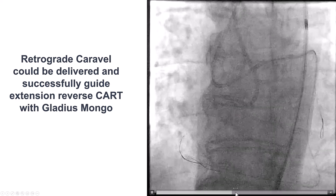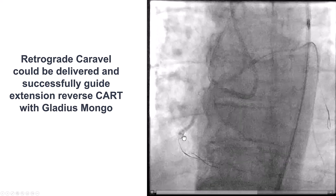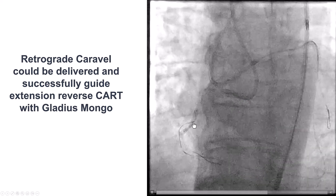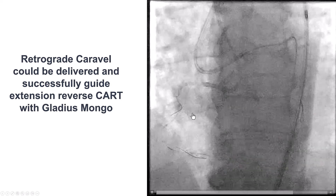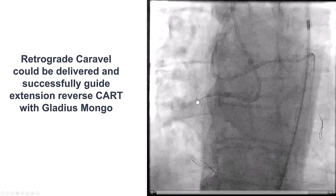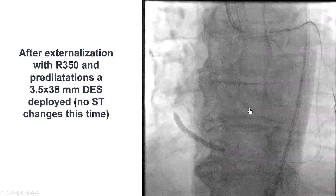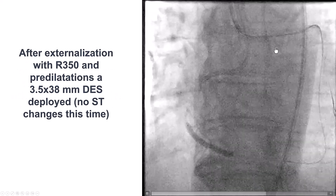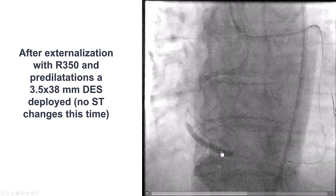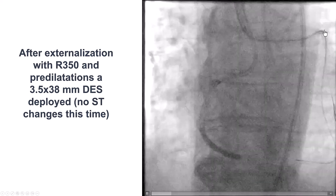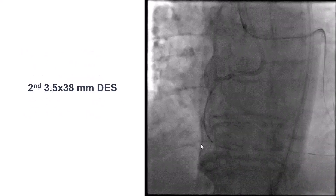We then advanced a Gladius Mongo guidewire using the reverse CART technique — the antegrade balloon inflated, and then the retrograde Gladius wire advancing along the course of the vessel. We successfully entered into the antegrade guide catheter. We were concerned about ischemia again, but fortunately the patient remained very stable despite externalizing the guidewire — perhaps due to the low profile of the Caravel microcatheter.